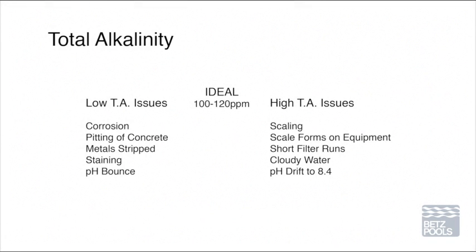Tied to pH is total alkalinity. Total alkalinity is the key to water balance. It's the measurement of the water's ability to resist changes in pH, also known as the buffering capacity of water. The ideal range is 100 to 120 parts per million. High alkalinity makes it hard to change pH, and causes cloudy water and scaling. Low alkalinity causes dramatic changes in pH known as pH bounce, and causes corrosion of equipment and pool and spa surfaces. This is why it's important to balance the alkalinity before pH.